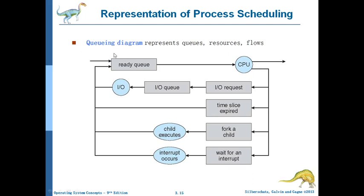When the process is admitted from the job queue to the ready queue, it enters from the hard disk. From the ready queue, the process will be selected by the scheduler based on different criteria. It selects one process from multiple processes and that process goes to the CPU. If the CPU execution requires only simple arithmetic operations, the process finishes and gets terminated.